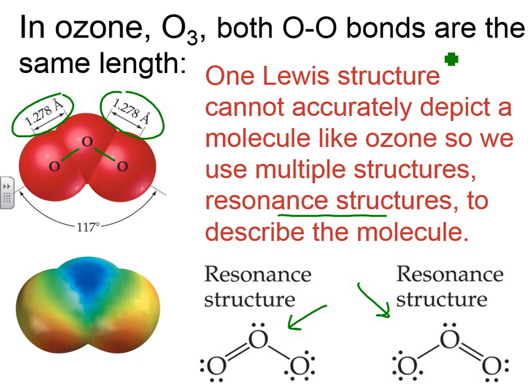So what we'll do is we'll have to show this resonance using a double-sided arrow, double-headed arrow like so. And again, this comes from experiments. Experimentally, both of these bonds are the same length. And it's pretty amazing that scientists can measure the bond lengths to this accuracy. Because they are the same length, we have to account for that in our Lewis structures.